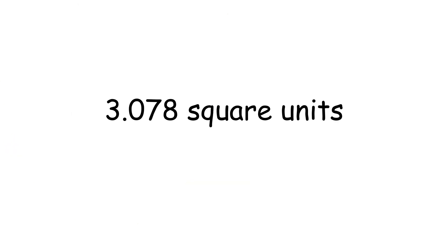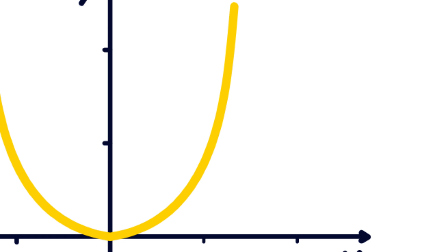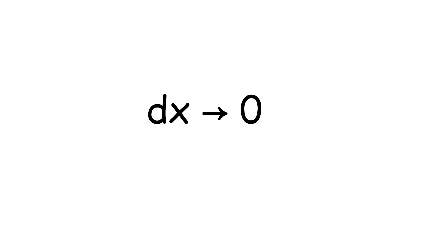Multiply each height by 0.3, add them all up, and you get an approximate area. But what if we make the slices super thin, almost invisible? We call that tiny width dx. When dx becomes extremely small, almost 0, the total area becomes exact.